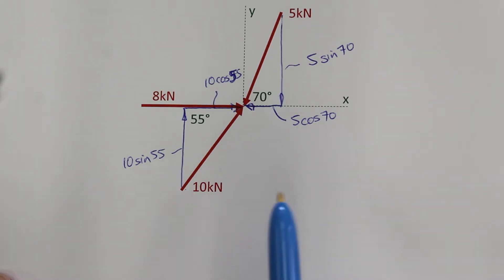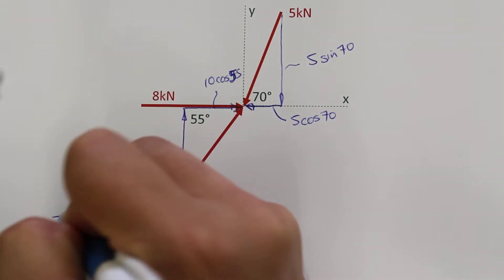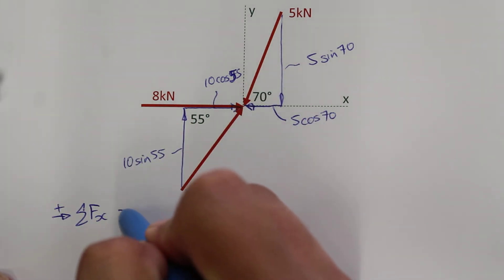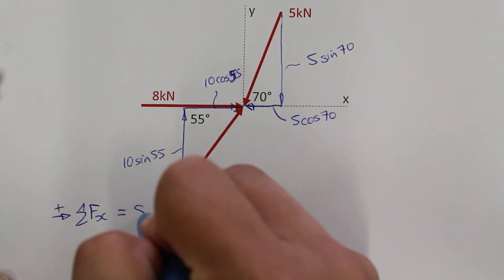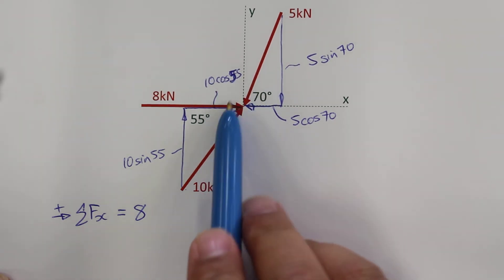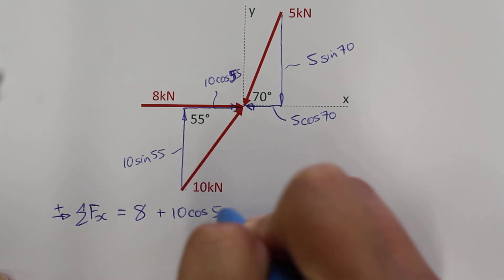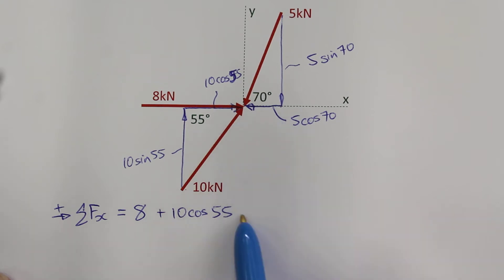The next step is to find out the total force in the x direction and the y direction. For adding the forces in the x direction, where forces to the right are positive, I will have 8kN to the right, 10 cos 55 to the right, and 5 cos 70 to the left.